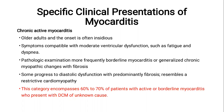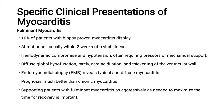Fulminant myocarditis represents only 10 percent of patients with biopsy-proven myocarditis. It usually has an abrupt onset, leading to hemodynamic compromise and hypotension, usually necessitating the use of mechanical circulatory assist device. There is diffuse global affection by cardiac imaging and also by endomyocardial biopsy. Supporting these patients is very important because they have very good prognosis — if you support them, most of them will recover.